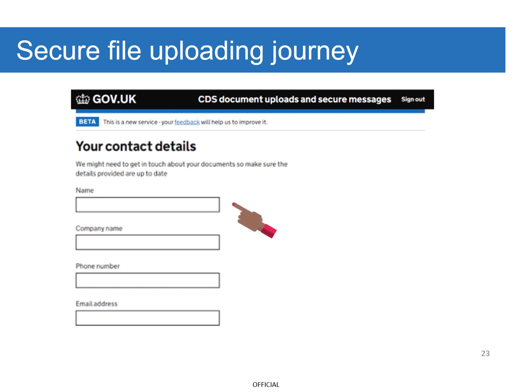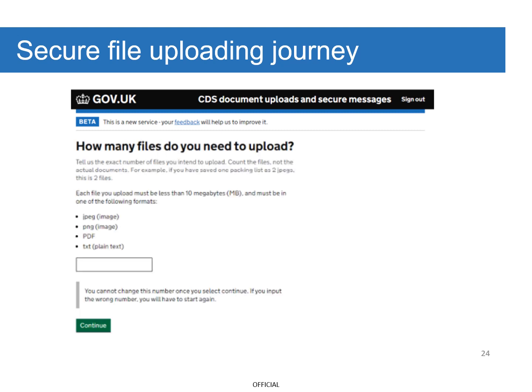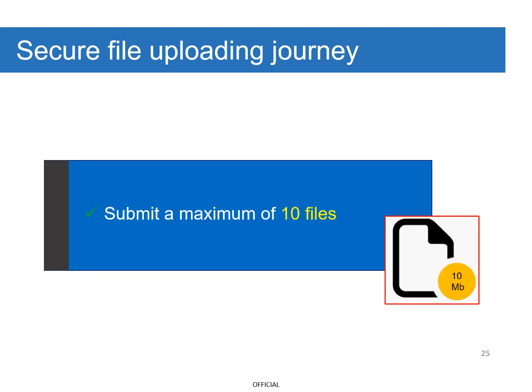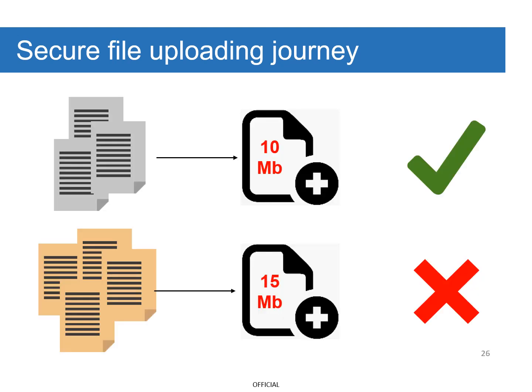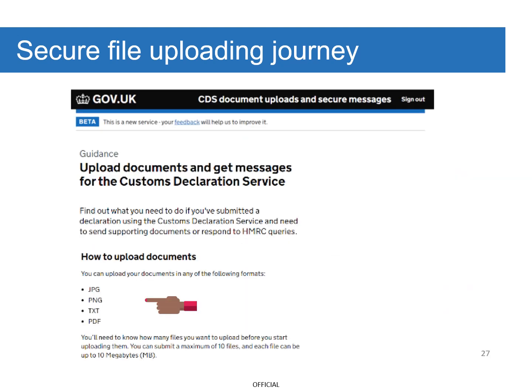Next, you'll be asked to enter your contact details: your name, company name, phone number, and email address. Once you have filled in your contact details, you'll be asked to specify the number of files you want to upload. You can submit a maximum of 10 files. You're able to upload multiple documents as a single file as long as the size of the file doesn't exceed the maximum of 10 megabytes. Acceptable formats are JPEG, PNG, TXT, and PDF.